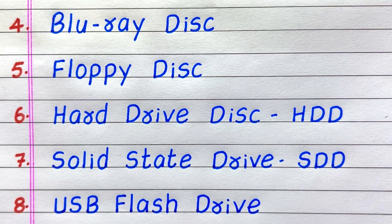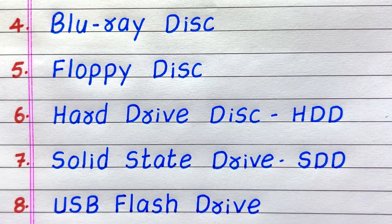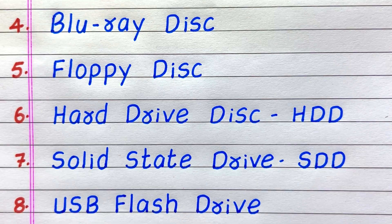The name of the fourth storage device is blu-ray disc. Fifth: floppy disk. Sixth: hard drive disk. Seventh: solid state drive. Eighth: USB flash drive.